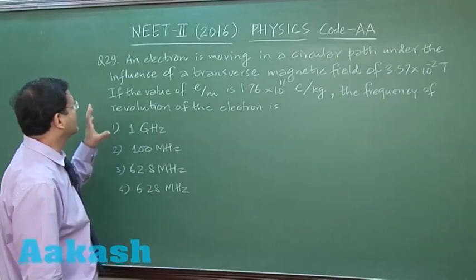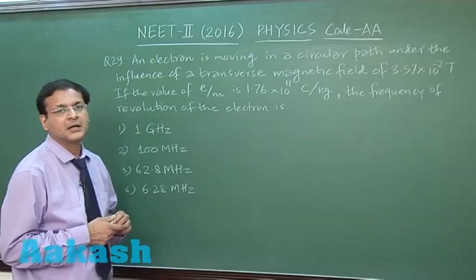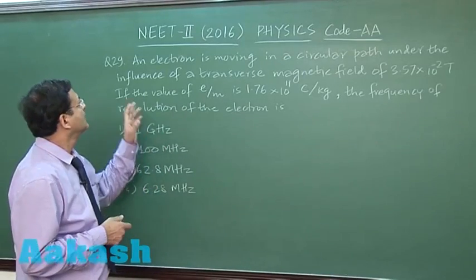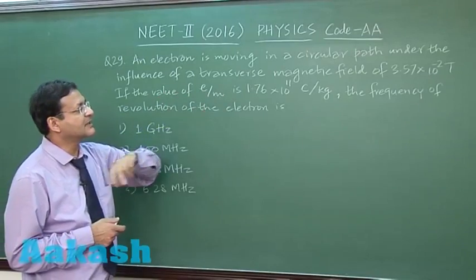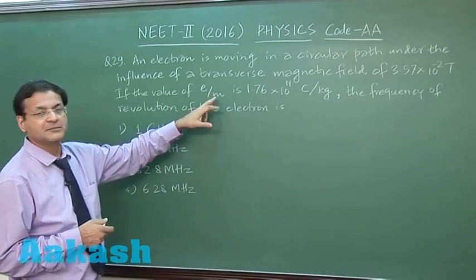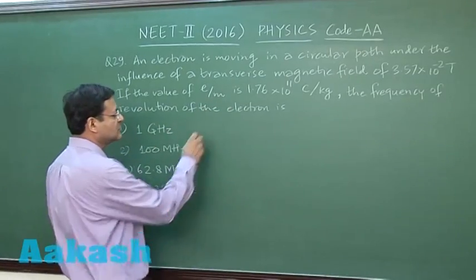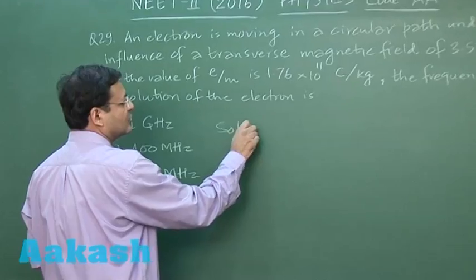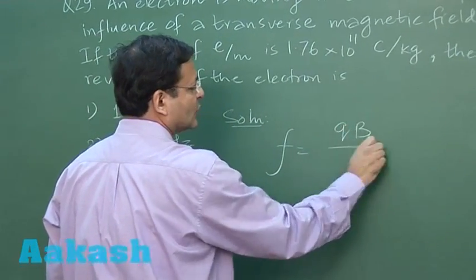Question 29 is based on circular motion of a charged particle in transverse magnetic field. An electron is moving in a circular path under the influence of a transverse magnetic field. If the value of E/M charge-to-mass ratio is given, then the frequency of revolution uses the standard expression: frequency equals QB/(2πM).